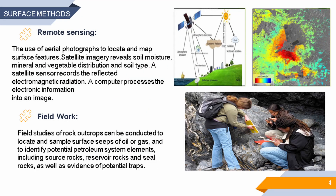To begin with surface methods: remote sensing uses aerial photographs to locate and map surface features, and a satellite sensor records the reflected electromagnetic radiation which is processed into an image. Also, fieldwork — field studies of rock outcrops can be conducted to locate and sample surface petroleum systems as evidence of potential traps. That was my part of the presentation.